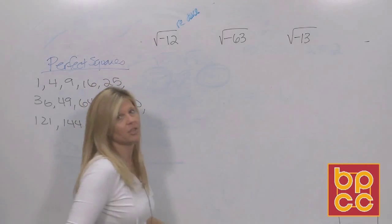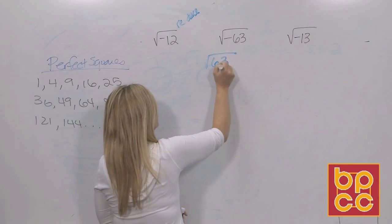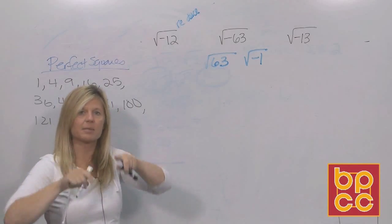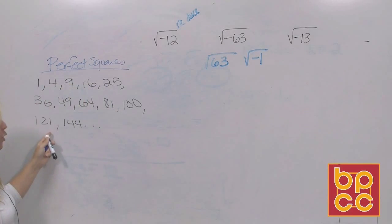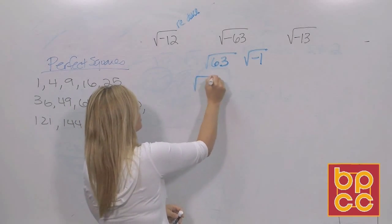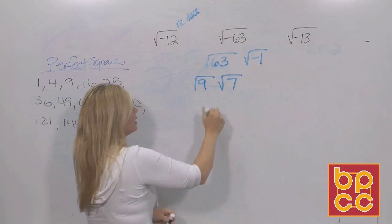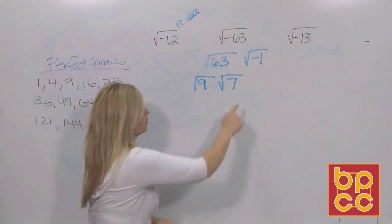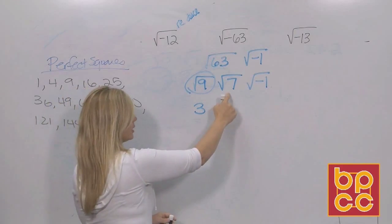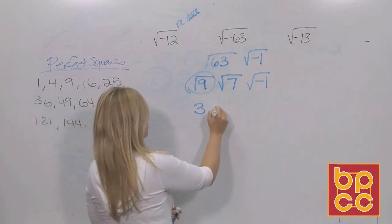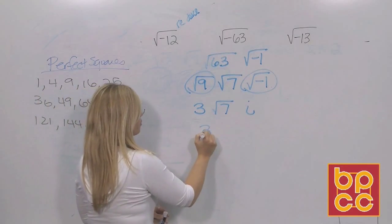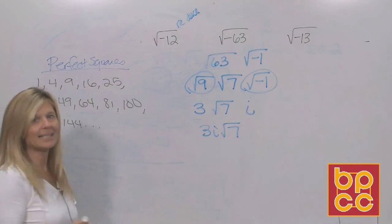The square root of negative 63: this is square root of 63 times square root of negative 1. Since 63 is not a perfect square, go to the perfect square list — 9 goes into 63, so write 63 as 9 times 7. The square root of 9 is 3, which comes out. The number 7 cannot be square-rooted — there's no same number that multiplies to 7 — so it stays inside the symbol. The square root of negative 1 is i. Written correctly, the answer is 3i√7.